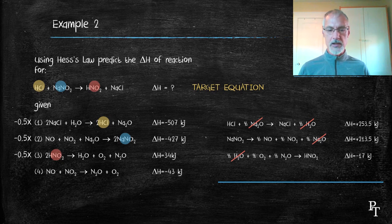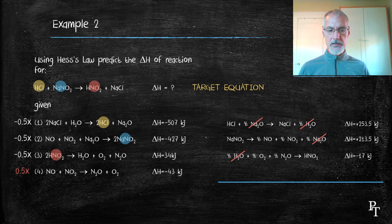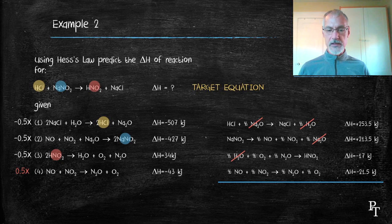So examining equation number four, I can see I can remove the oxygen by multiplying that equation four by a half. And when I do so, I'll now arrive at this equation. The presence of these will now cancel out some of my unwanted species.